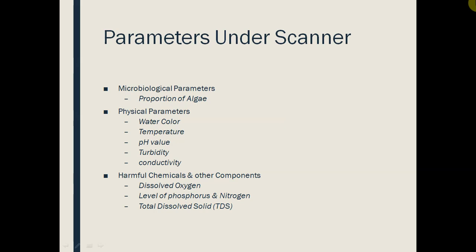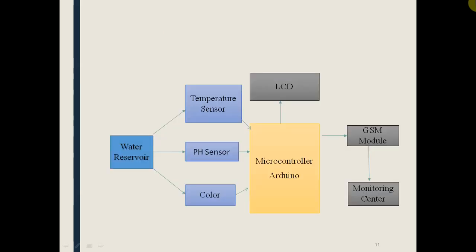We have successfully collected all four parameters and the machine is working properly. If the government or any agency demands it, we will increase the parameters we collect. The system design includes water sensors — temperature sensor, pH sensor, TDS sensor, and turbidity sensor. We can also use a color sensor, but at this time we have used only TDS and turbidity sensors.